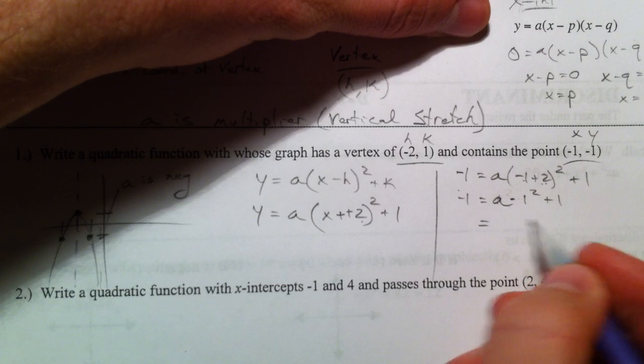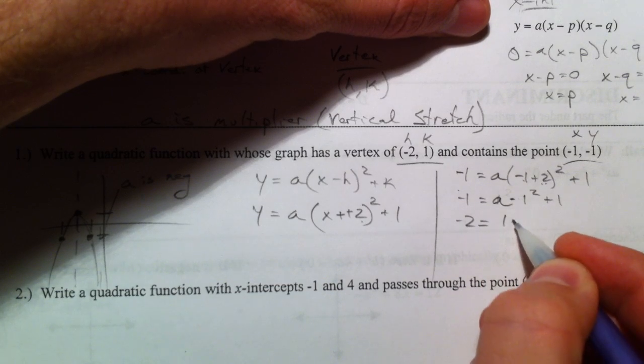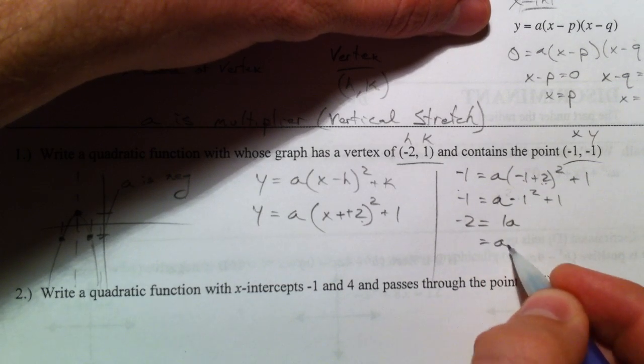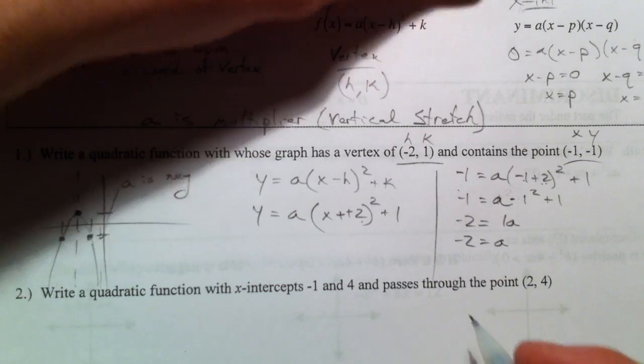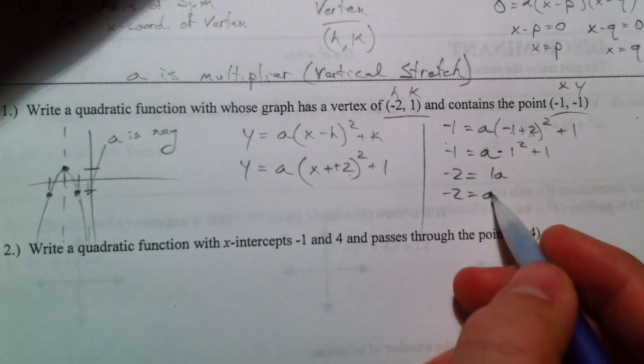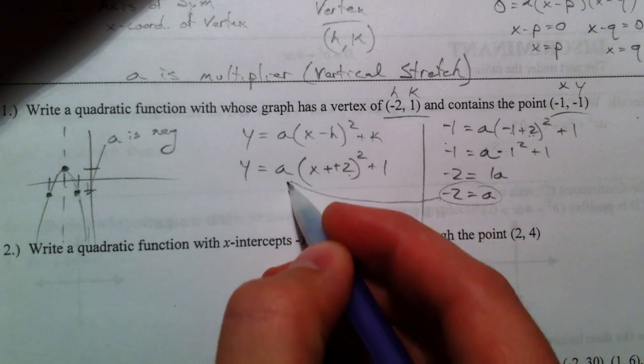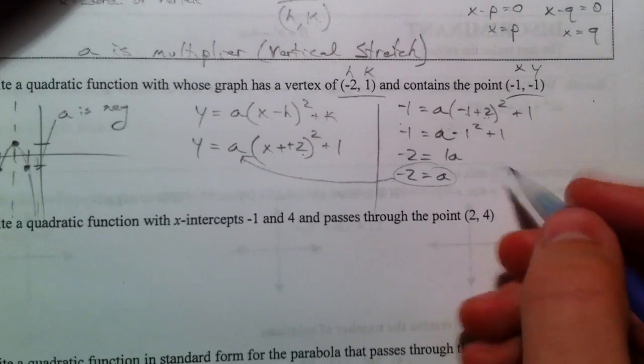If we solve this, subtract 1, you get negative 2, 1a. So a equals negative 2. And so that is what goes in there to write your final equation.